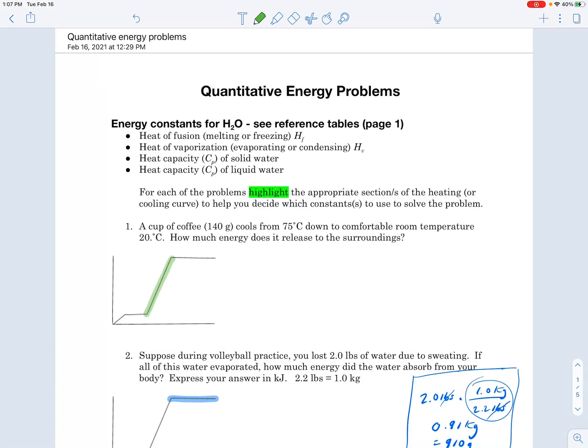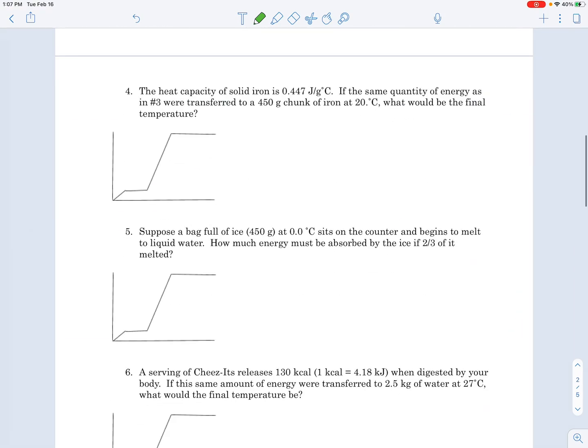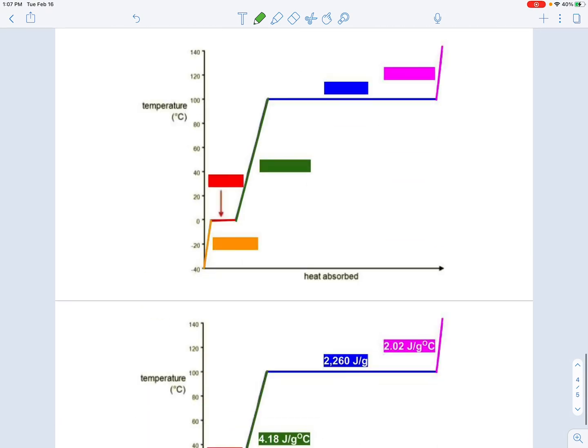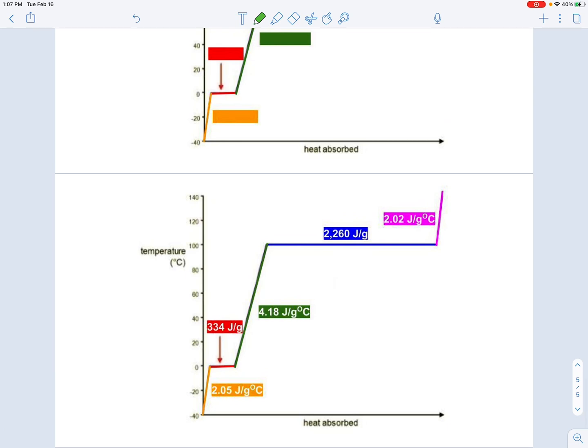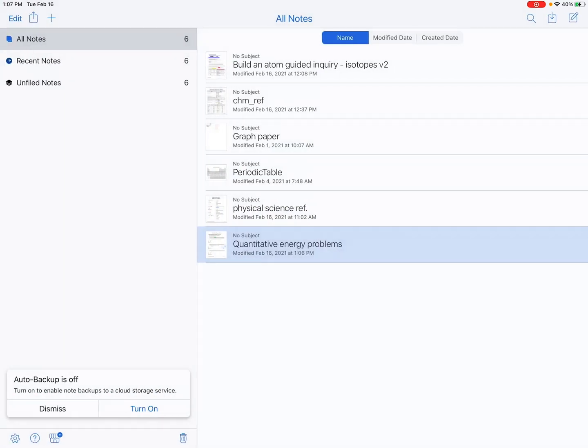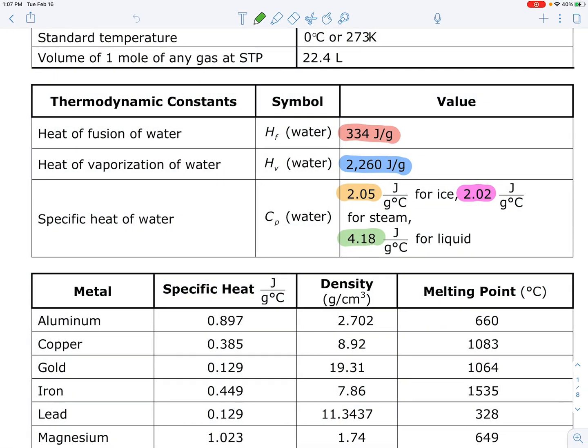Quantitative energy problems. I'm going to work through three problems in this worksheet. Each problem has a heating curve already drawn, which you need to do in your notebook. We're also going to identify which part of the heating curve we're dealing with. These constants over here are for the five different parts of the heating curve. They can be found in your reference table, on the very first page.